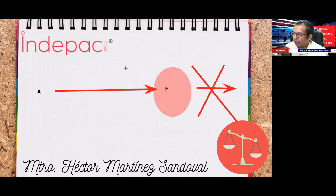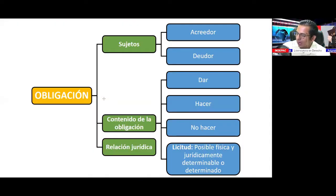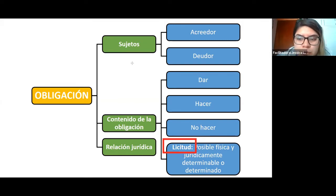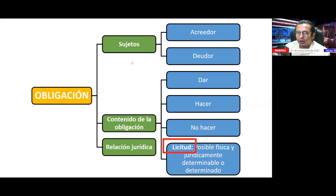El contenido tiene que ser lícito. Un compañero tiene una duda: ¿cuáles son las voluntades que generan obligaciones sólo para una parte? Las obligaciones siempre son vínculos que surgen entre dos partes. Si hablamos de un acto jurídico gratuito, como la donación pura y simple, A se compromete a transmitir gratuitamente un departamento a B, y la única carga que tiene B es aceptarlo o no.